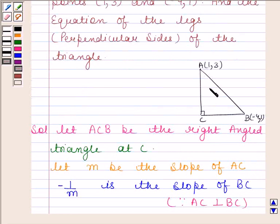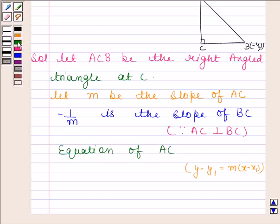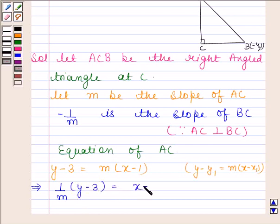Here line AC is passing through point (1, 3) and having slope m. So equation of AC is y - 3 = m(x - 1). This implies (1/m)(y - 3) = x - 1.